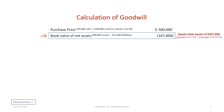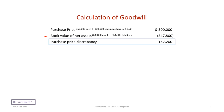Next, we determine the book value of the net assets purchased. There are two ways to do this. One is to take assets minus liabilities: Zorin's assets totaled $898,800 and the liabilities were $551,000, giving net equity of $347,800. This can be confirmed by adding $50,000 in common shares plus $297,800 of retained earnings. Our $500,000 purchase price minus $347,800 book value of net assets gives us a purchase price discrepancy of $152,200.